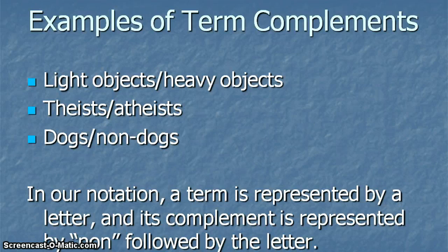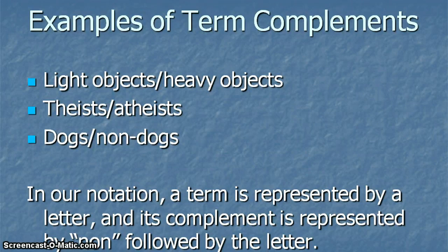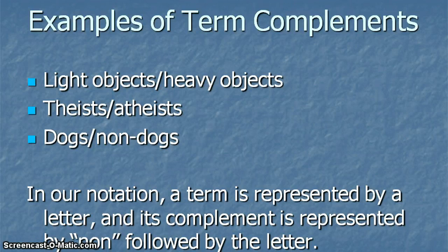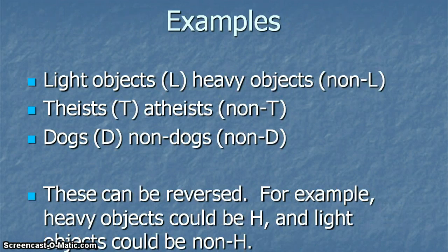The opposite of a term is going to be called the term complement — it's just the opposite. So: light objects, heavy objects; theists, atheists; dogs, non-dogs. Now some of you are going to say there's an in-between — a medium-weighted object, or agnostics somewhere between theists and atheists. But let's assume we're talking about terms where something is either that or something else. In our notation, a term will be represented by a letter, and its complement will be represented by non followed by the letter. Light objects are L, heavy objects non-L; theists T, atheists non-T; dogs D, non-dogs non-D. They could be reversed — heavy objects could be H and light objects non-H. It doesn't matter.